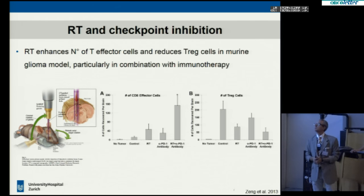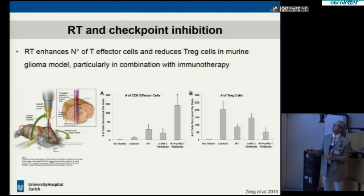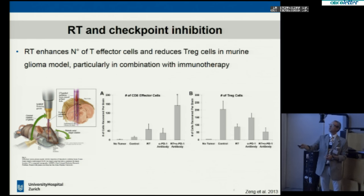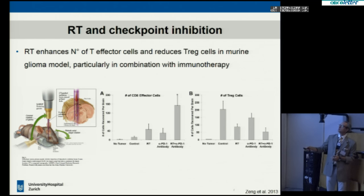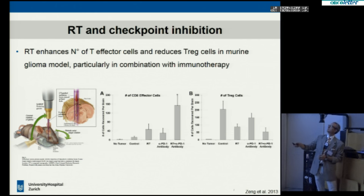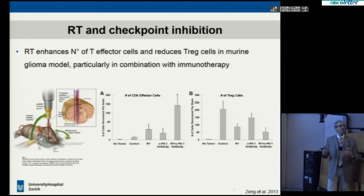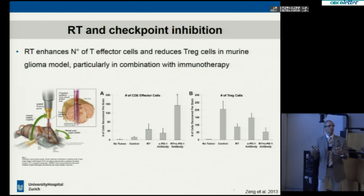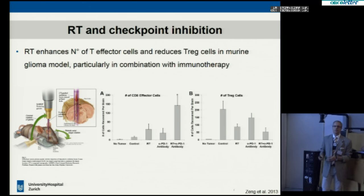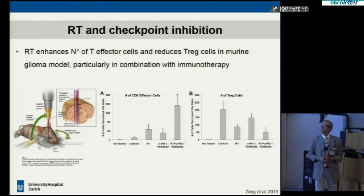I wanted to highlight a few experiments. In a mouse glioma model, glioma was implanted locally in the brain and only locally irradiated with a stereotactic technique. This group saw that irradiation or an anti-PD-1 antibody both increased the count of CD8 effector cells, but given in combination they significantly boosted this reaction. On the other hand, the combination had the strongest impact on inhibiting regulatory T cells, and this translated into a prolonged survival in animals treated with the combination.